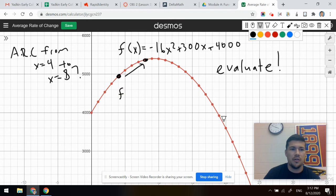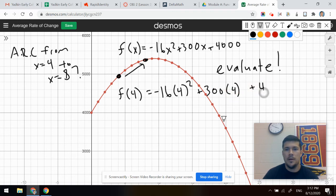What you're going to do is you're going to calculate F of four. You're going to substitute four into this function just like you would with any other evaluation. In other words, you're going to say four squared times negative 16 plus four times 300 plus 4000.